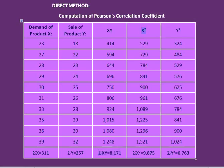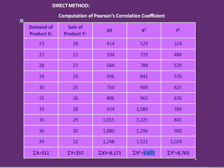Next, square the X values. 23² = 529; 27² = 729; 28² = 784; 29² = 841; 30² = 900; 31² = 961; 33² = 1089; 35² = 1225; 36² = 1296; 39² = 1521. Adding all X square values gives Sigma X square equals 9875.